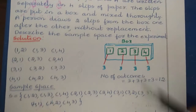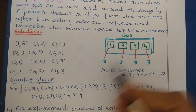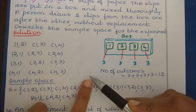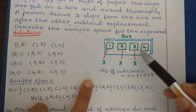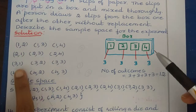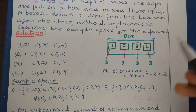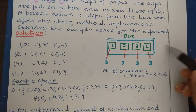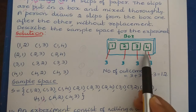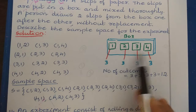If the person takes 3 first, then the second number can be 1, 2, or 4. So we get (3,1), (3,2), (3,4). And if the person takes 4 first, then the second number can be 1, 2, or 3. So we get (4,1), (4,2), (4,3). These are the possible outcomes of this experiment.